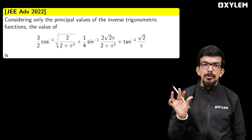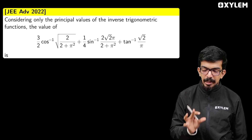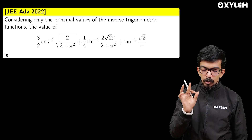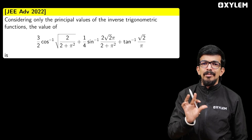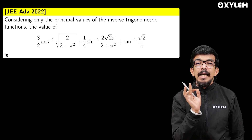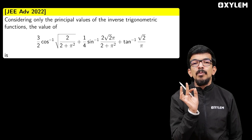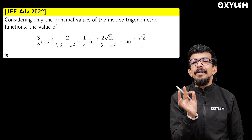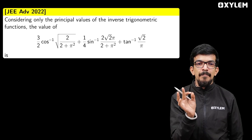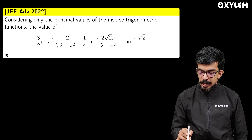Tan inverse of something — what is the angle? Sin inverse of something, cosine inverse of something — look at the angles. These angles are not standard values. What is the angle?